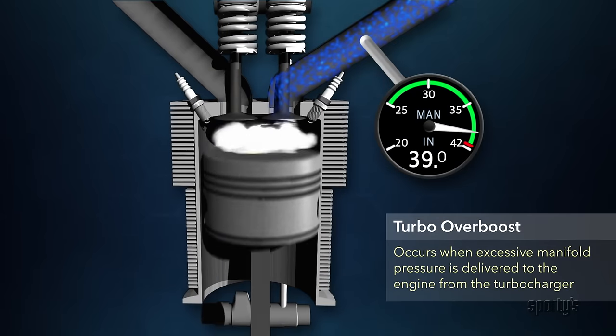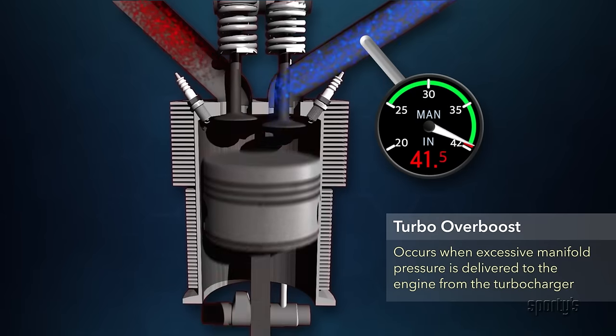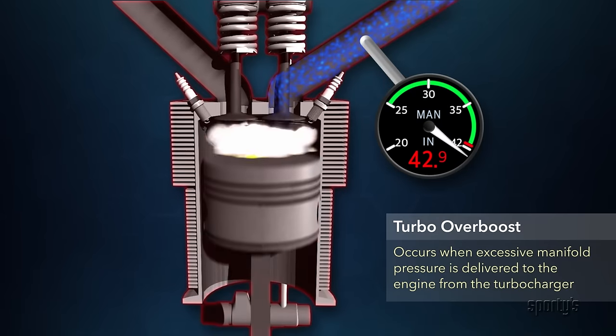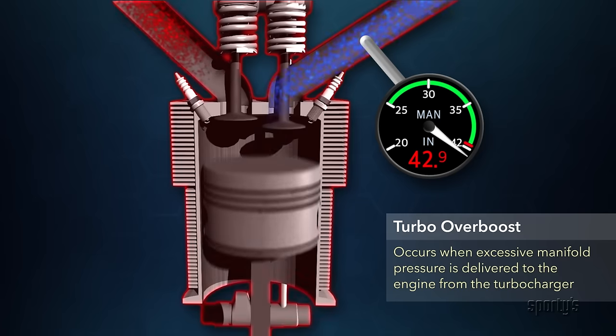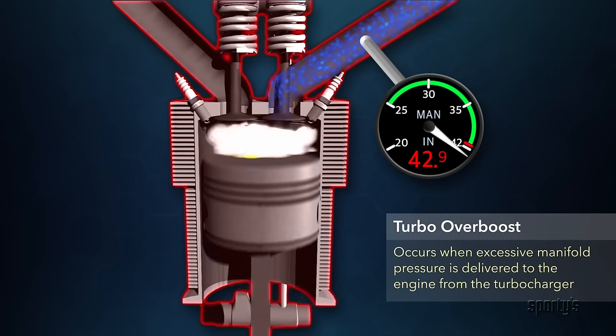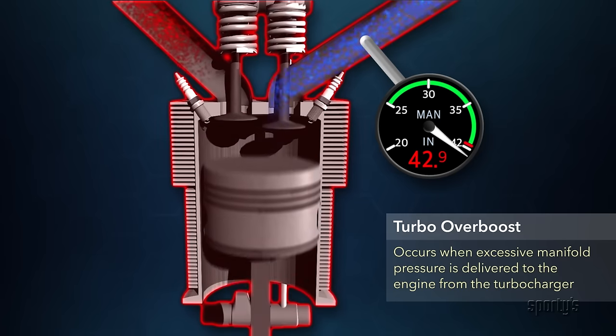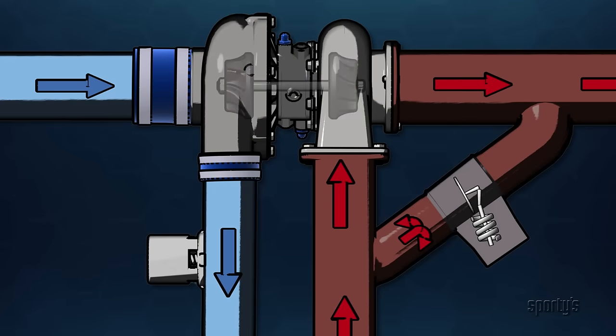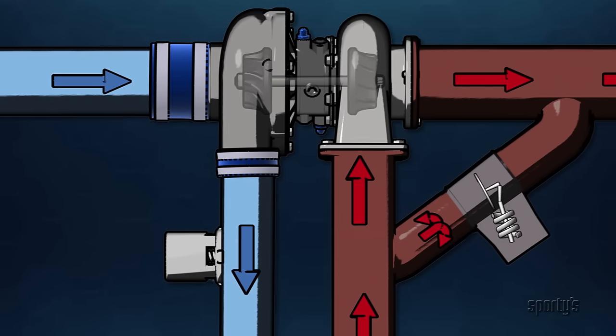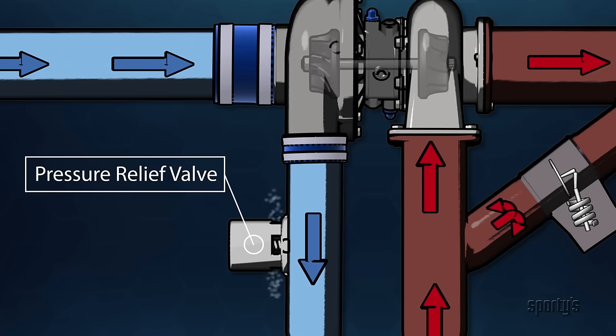If some extra manifold pressure is good, it doesn't follow that a lot is better. Too much manifold pressure is called over-boosting, which may damage or even destroy an engine. Virtually all modern factory-installed systems include safeguards to prevent over-boosting. This is generally accomplished with the use of a pressure relief valve installed in the induction system.